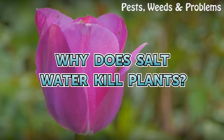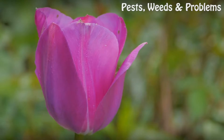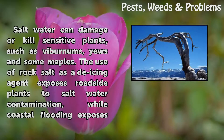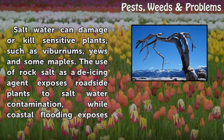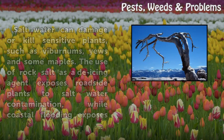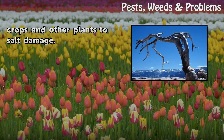Why does saltwater kill plants? Saltwater can damage or kill sensitive plants such as viburnums and some maples. The use of rock salt as an icing agent exposes roadside plants to saltwater contamination, while coastal flooding exposes crops and other plants to salt damage.